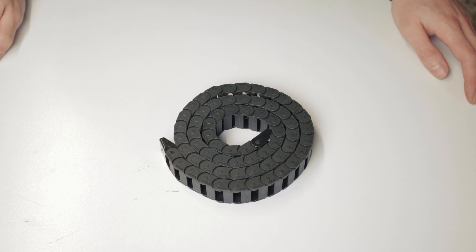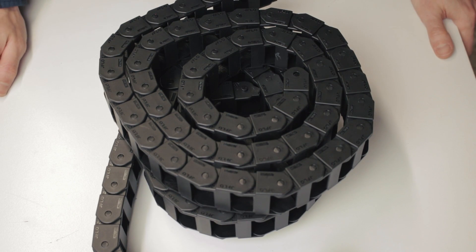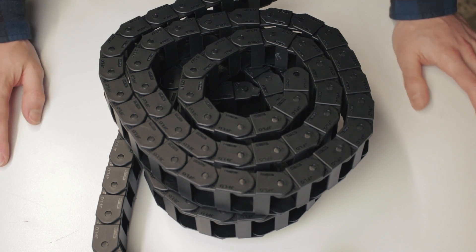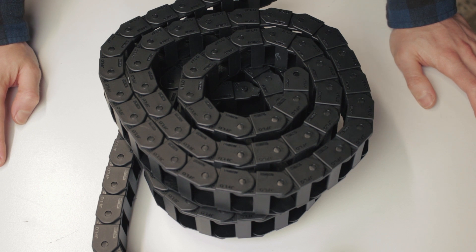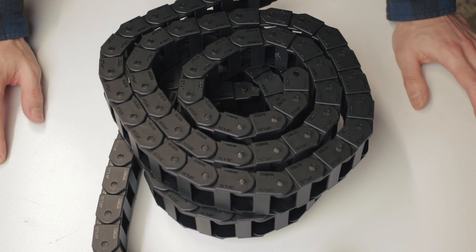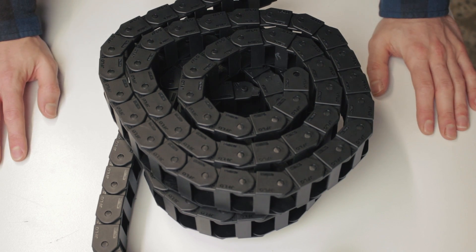Alright moving on, so here is a classic case of not paying attention when ordering things online. This is a 28 by 10mm cable chain or drag chain. It's nice and lightweight and good for holding a few small cables. This is what I accidentally ordered, 25 by 18mm cable chain. I mean it's fine, I'll use it on the y-axis but it is a bit heavy duty. But on the flip side it can do this.